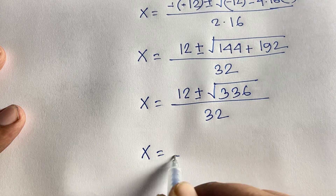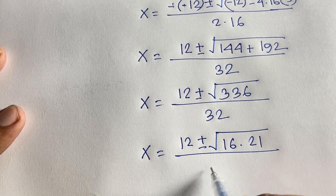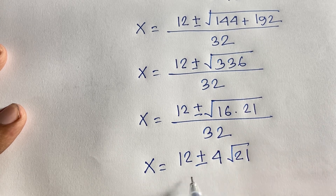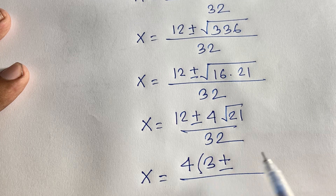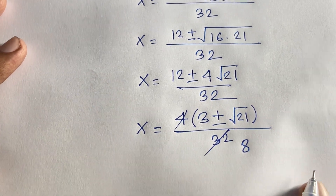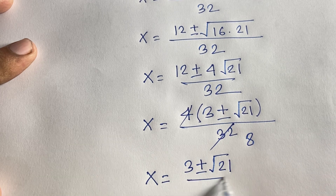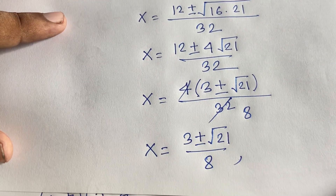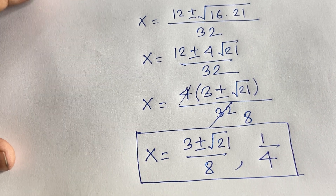Simplifying: 336 equals 16 times 21, so square root of 336 equals 4 square root of 21. Thus x equals (12 plus or minus 4 square root of 21) over 32. Factoring out 4 gives (3 plus or minus square root of 21) over 8, since 4 divided by 32 is 8. Our final answers are: x equals 1 over 4, and x equals (3 plus or minus square root 21) over 8. Thank you. If you enjoyed this video, please subscribe for more interesting videos. Goodbye, take care.